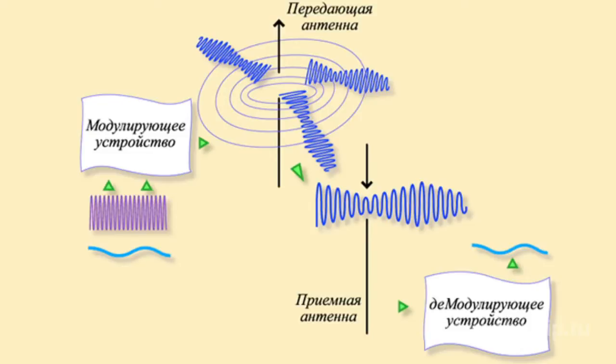It travels from the transmitter to the antenna. The antenna in its turn excites modulated electromagnetic waves in the ambient space.